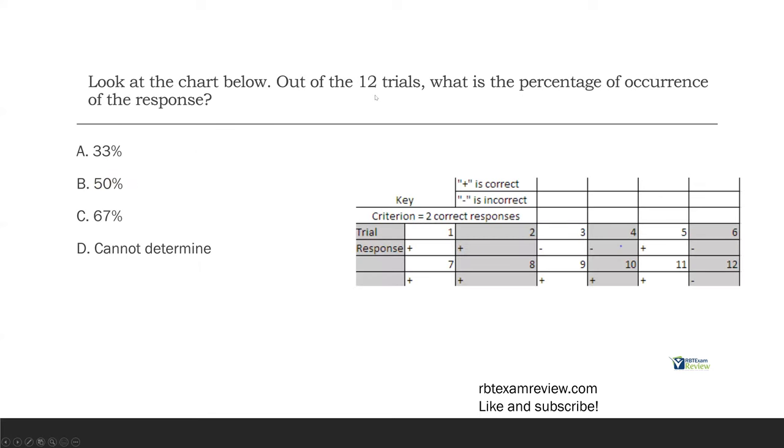Look at the chart below. Out of the 12 trials, what is the percentage of occurrence of the response? Well, what is percentage of occurrence? Of course, it's a type of measurement, and what are we trying to determine? We're trying to determine how often something happens given the opportunity. Given the number of trials, given the number of SDs, whatever it might be. What is the percentage of occurrence of the behavior happening?